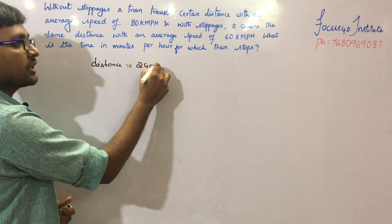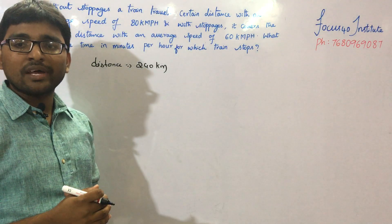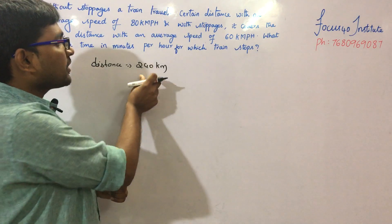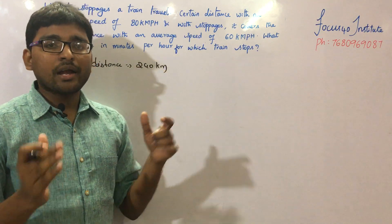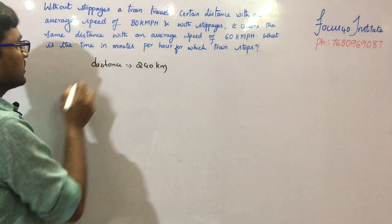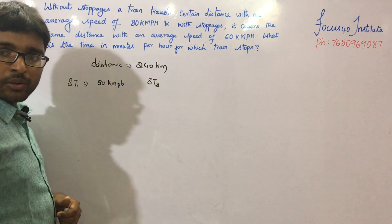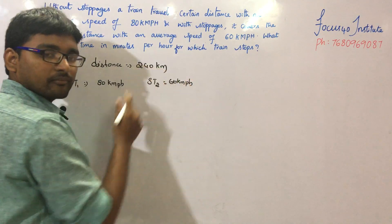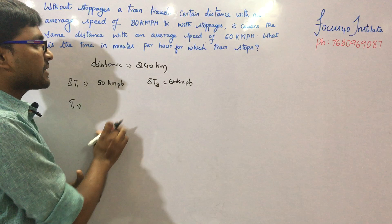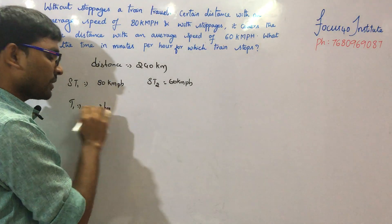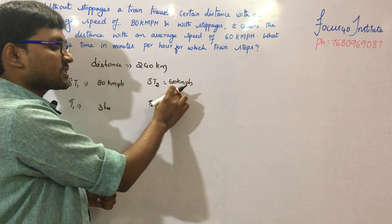We take the same distance as 240 kilometers. At 80 kilometers per hour, the time taken is 240 divided by 80, which gives 3 hours. At 60 kilometers per hour, the time taken is 240 divided by 60, which gives 4 hours.